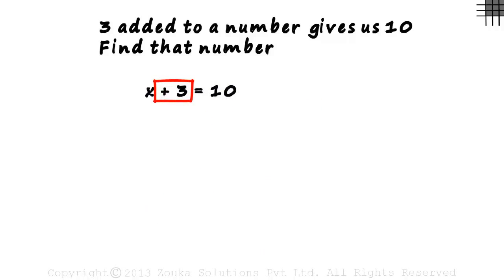3 is added to a number to get 10. We just assign a variable to that number. This is called an equation, and it helps us write large problems like these in a shorter way.